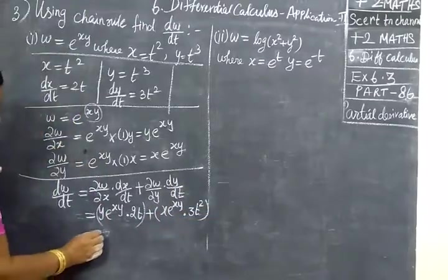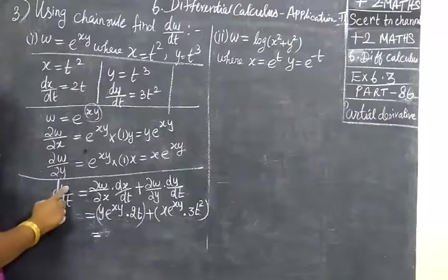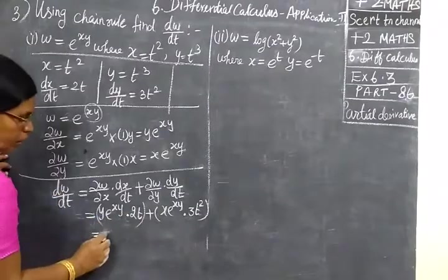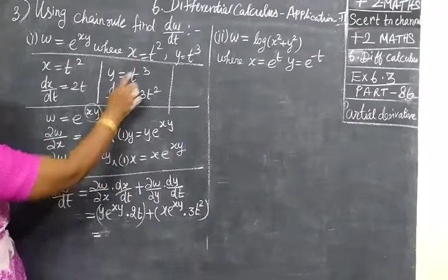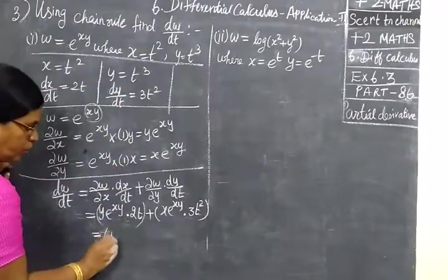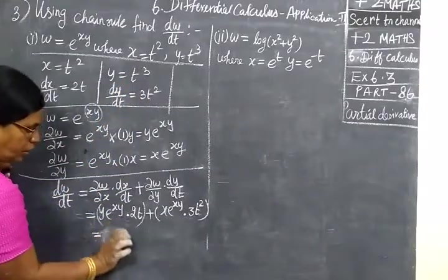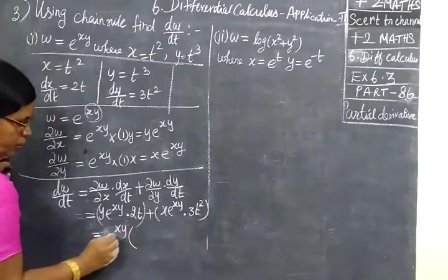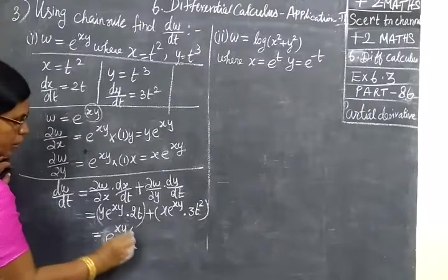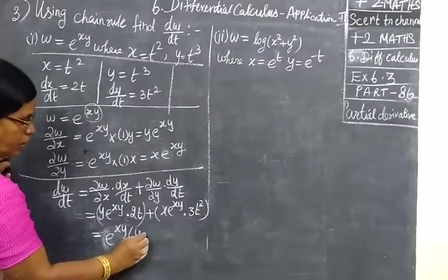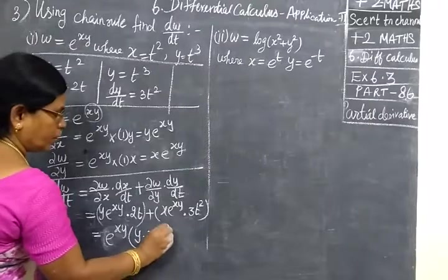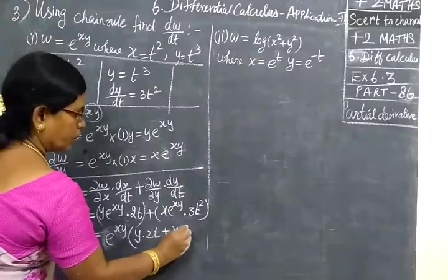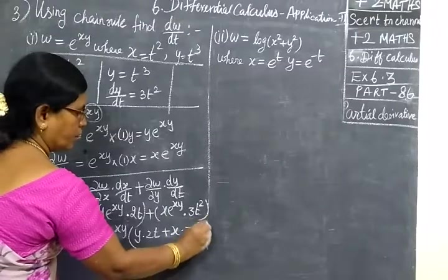Now, everything should be in terms of t. So, dw by dt in terms of t. y is t cube. So, e power xy — writing xy in terms of t — then writing y into 2t plus x into 3t square.